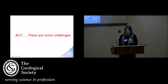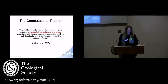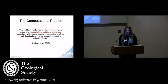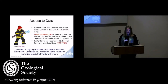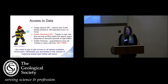But there are some challenges. The first problem is a computational problem. The proliferation of social media in recent years is presenting substantial computational challenges associated with the management, processing, analysis and visualisation of the corresponding massive volumes of data — that's actually becoming easier, but it is still a problem. Access to data: basically, you need to pay to get access to all tweets available, the Firehose. Otherwise, there are limits to the volume of matching tweets that Twitter will return. At BGS, the Geosocial application uses the Twitter streaming API, so we receive tweets in near real time as long as they match our search query, and it depends on the demand — during periods of high traffic, we won't necessarily get all the tweets back.